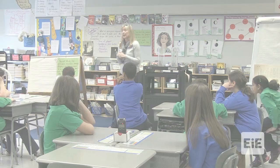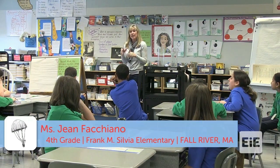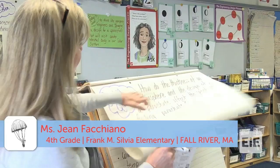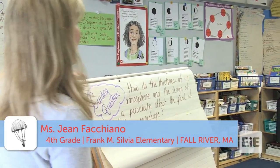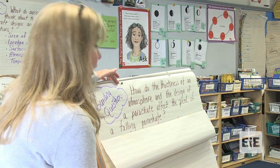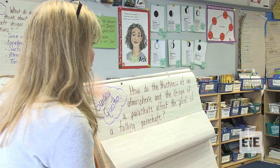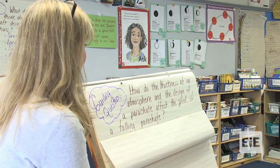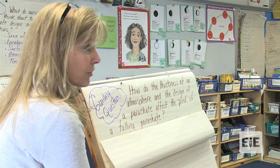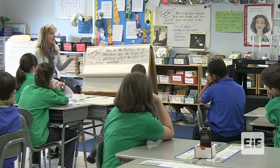Today we're going to work on the ask part of the engineering design process. Today's guiding question is: how do the thickness of an atmosphere and the design of a parachute affect the speed of a falling parachute? That's a lot — let's break it apart.